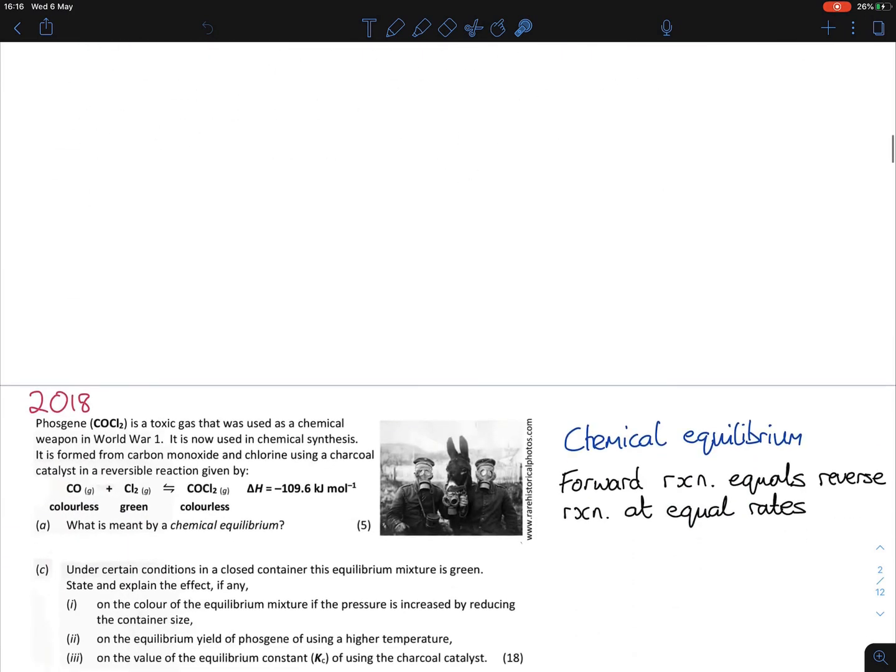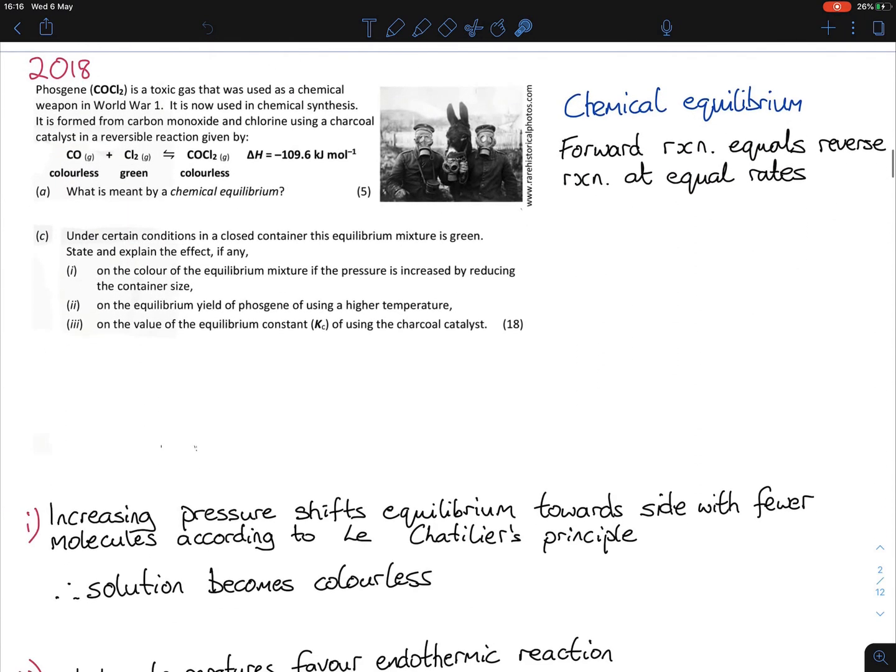2018 part A: What is meant by chemical equilibrium? It's a definition you have to know. The forward reaction equals the reverse reaction at equal rates. You must have equal rates in there. There are a couple ways to define this; I find this way to be the easiest.